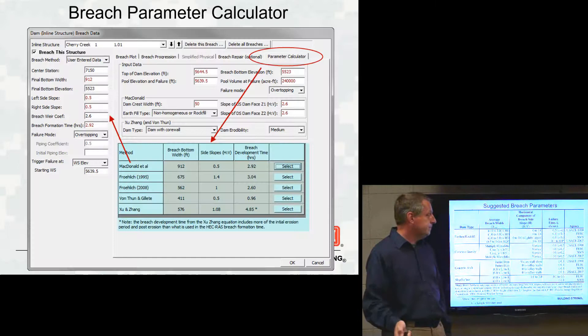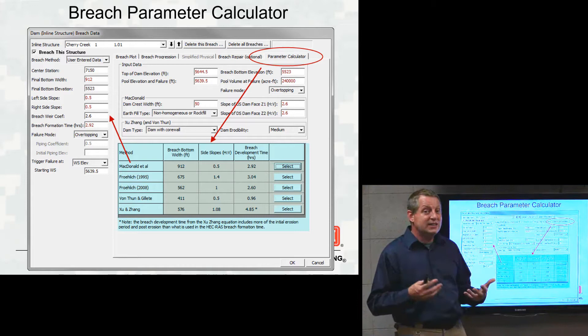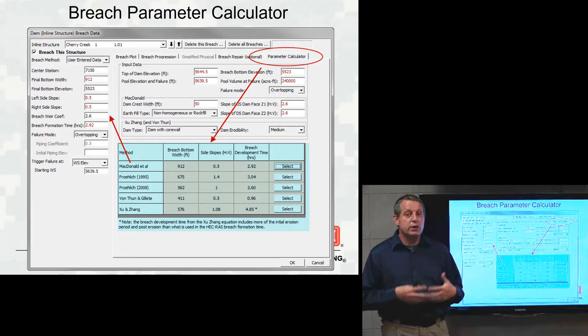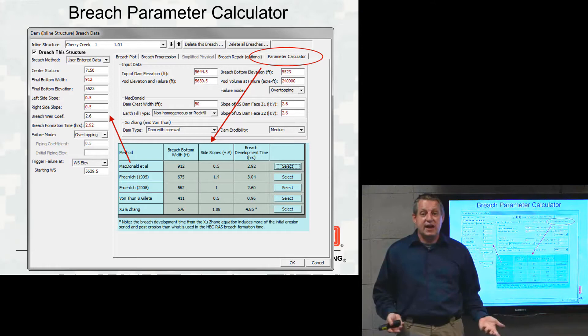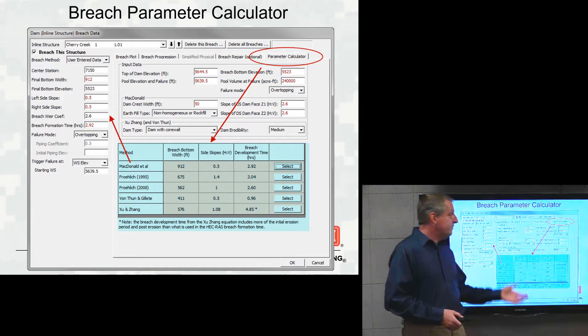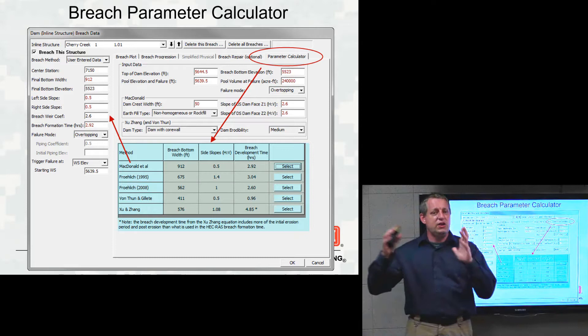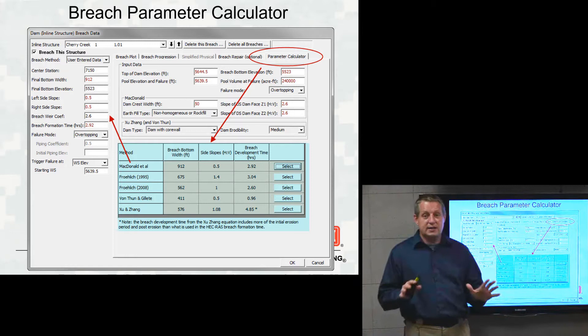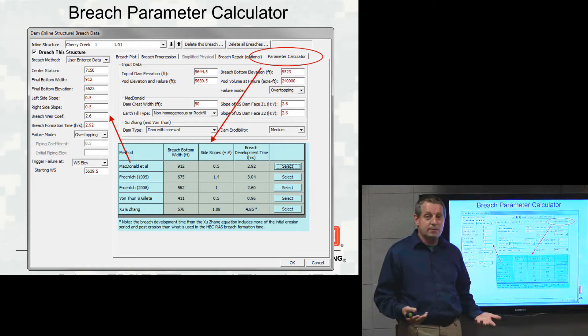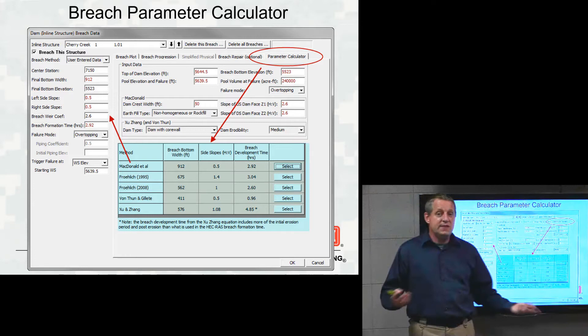The other thing you can do is calculate these parameters. There have been a number of scientific attempts to create regression equations that compute breach width and breach timing based on different dam and reservoir properties. We've added a calculator in RAS to help you run all these regressions on your dam and look at what this suite of equations outputs. You'll directly push the select button or type in these parameters — the calculator helps you think about them, but you're directly inputting the data.